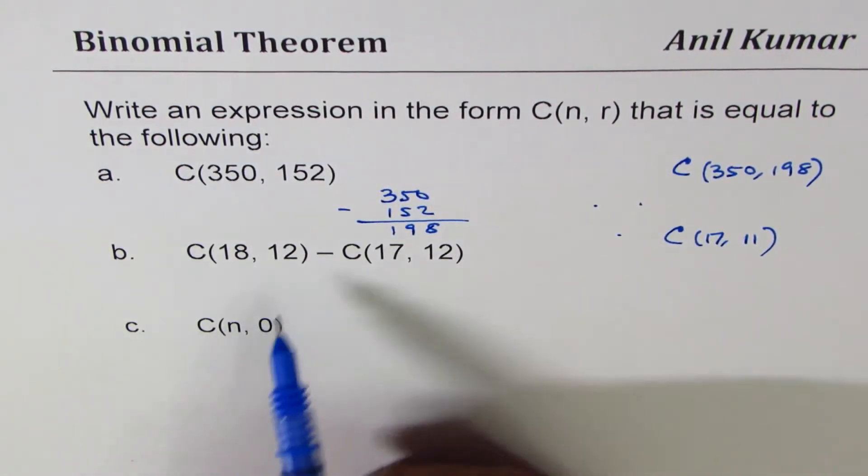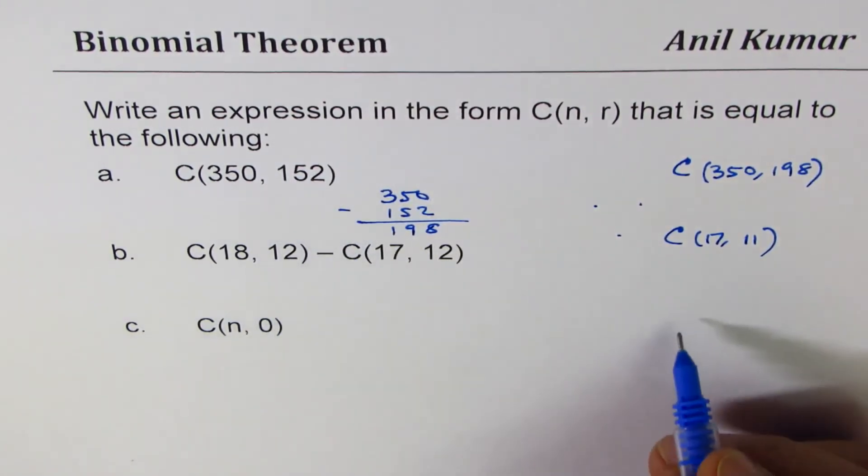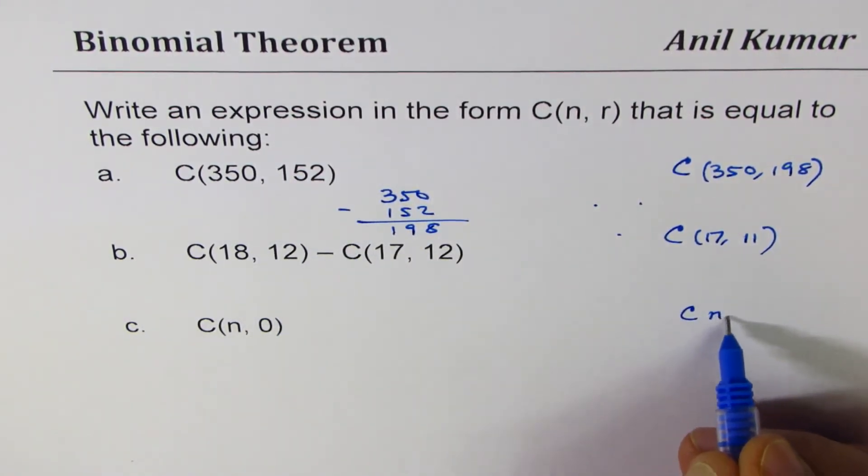C(n,0) comes from the symmetry just as we did in part 1. It is equal to C(n,n), right?